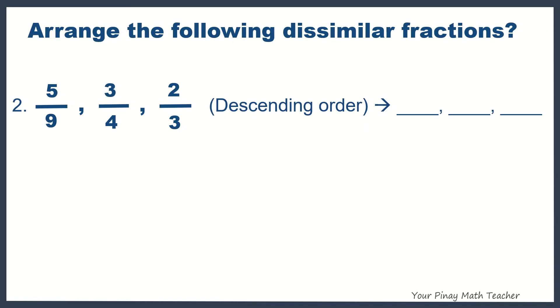Number 2: 5 ninths, 3 fourths, and 2 thirds are to be arranged in descending order or from the greatest to the least. Since its denominators are different, then we have to make the fractions similar by finding its LCD or LCM.